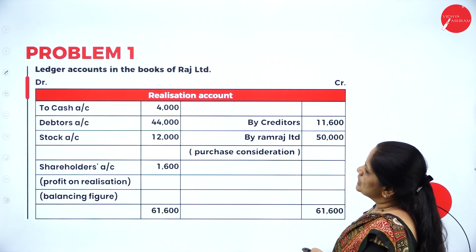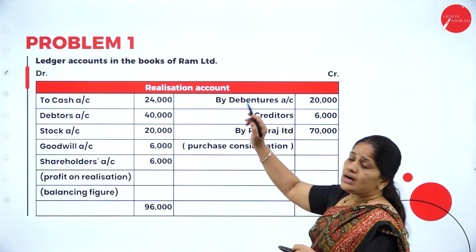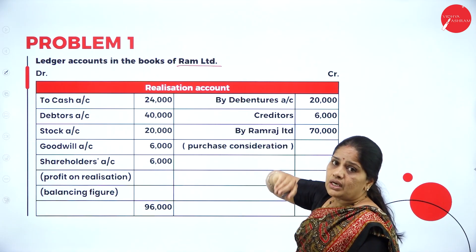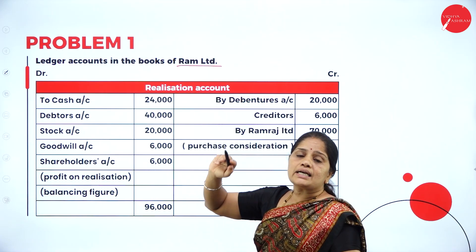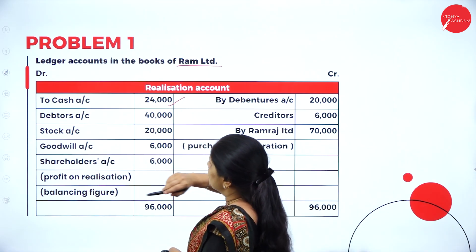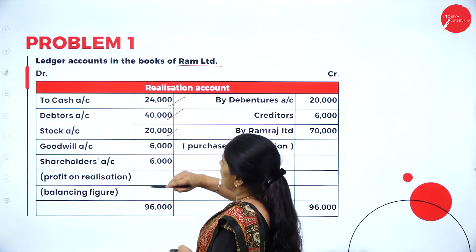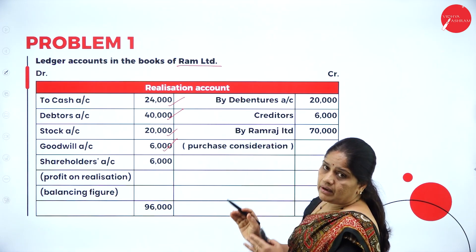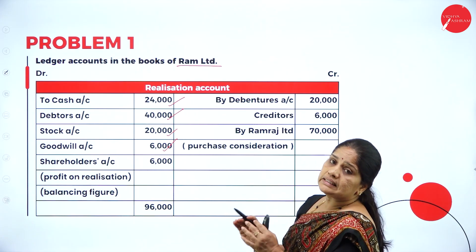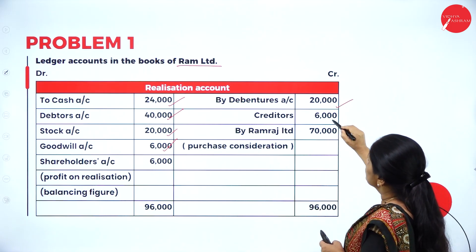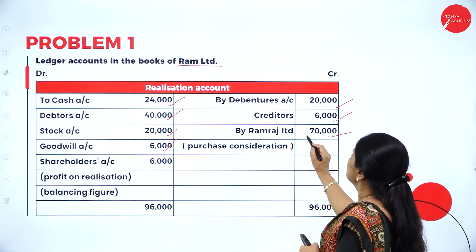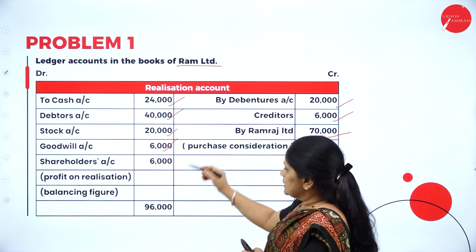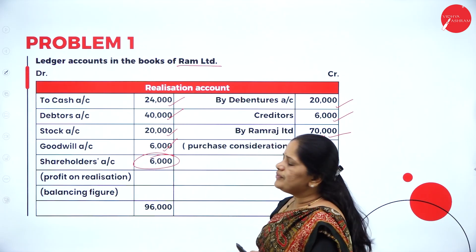Now we prepare the realization account in the books of Ram Limited. We take over all assets at balance sheet values: cash account 24,000, debtors account 40,000, stock account 20,000, goodwill account 6,000. For liabilities: debentures account 20,000, creditors 6,000. The purchase consideration agreed is 70,000. When totaled, we get 96,000 on one side, giving a difference of 6,000, which is the profit on realization.